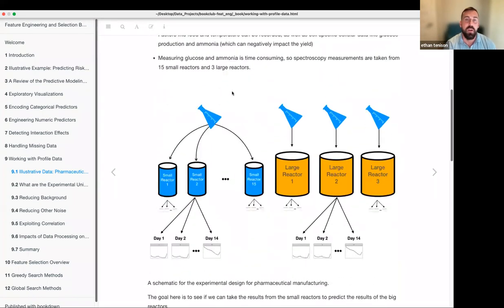Let's go down to the little image here. The one thing about that, though, is that measuring glucose and ammonia is extremely time-consuming and expensive. So they don't do that. What they do is use spectroscopy. Say that three times. Spectroscopy measurements on each of the reactors. And so there are 15 small reactors in blue. And they're trying to make predictions about the three large reactors in yellow.